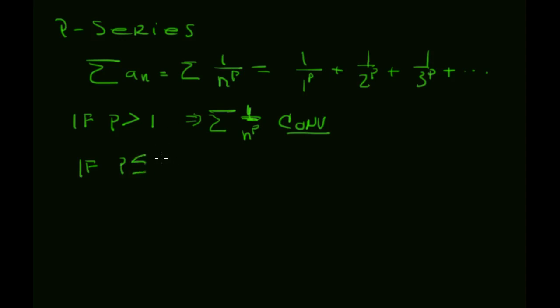But the nice thing about this is that we also get a rule for divergence. So if p is bigger than 1, we get convergence. But if p is less than or equal to 1, we get divergence. Now note, if p is equal to 1, this is just the harmonic series, and we know that diverges. But if p is less than or equal to 1, we're going to get divergence.